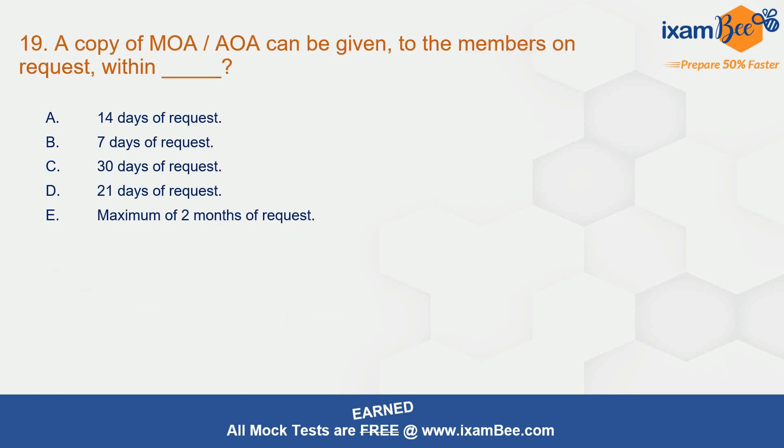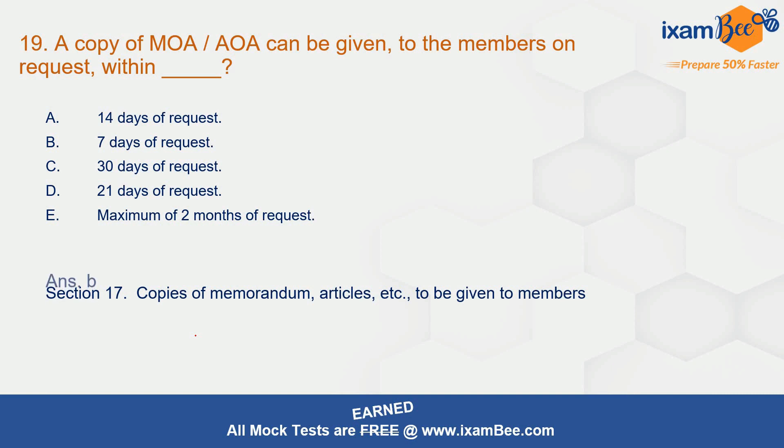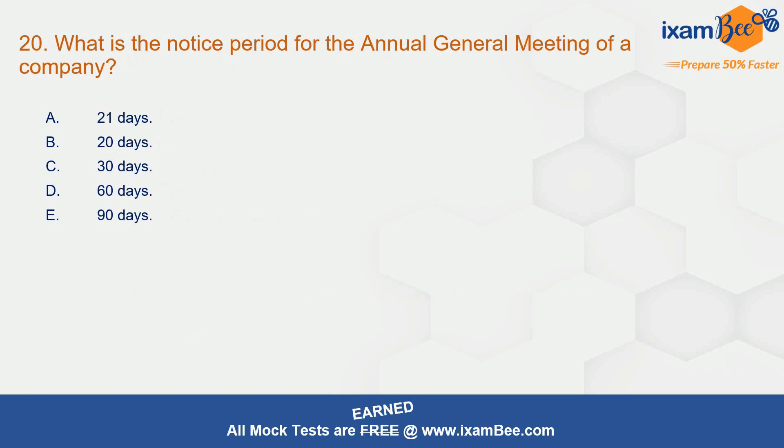Question 19: a copy of the memorandum of association or articles of association can be given to the members on request within — correct answer is B — seven days of such request. Section 17 talks about this.